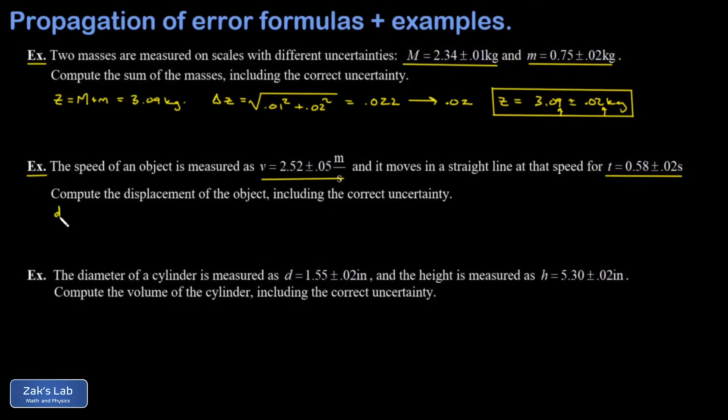So this time, our combined quantity is a product. Because to get the displacement, I need to multiply speed times time. And we plug the numbers into that. And we come out with a displacement of 1.4616, just keeping a lot of extra digits for now. And that's meters.